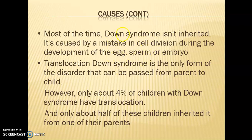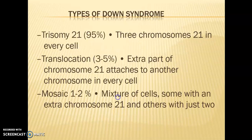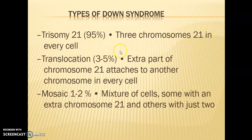Of that four percent with translocation Down syndrome, only about half actually inherited it from one of their parents — meaning roughly two percent of the total Down syndrome population is inherited from a parent. The vast majority, 95 percent, belong to Trisomy 21, where there are three chromosomes at the 21st pair in every cell instead of the normal two.